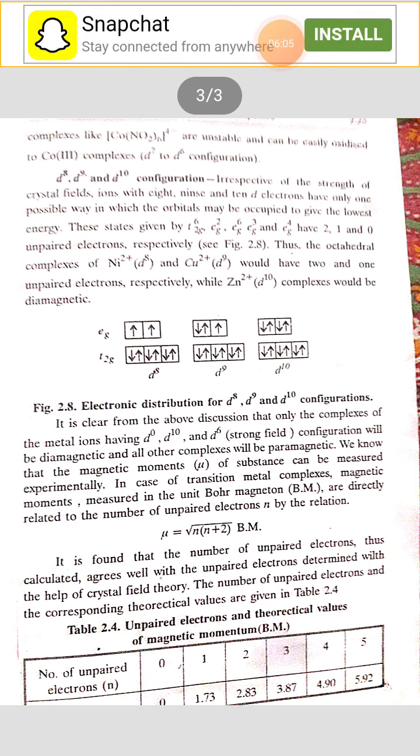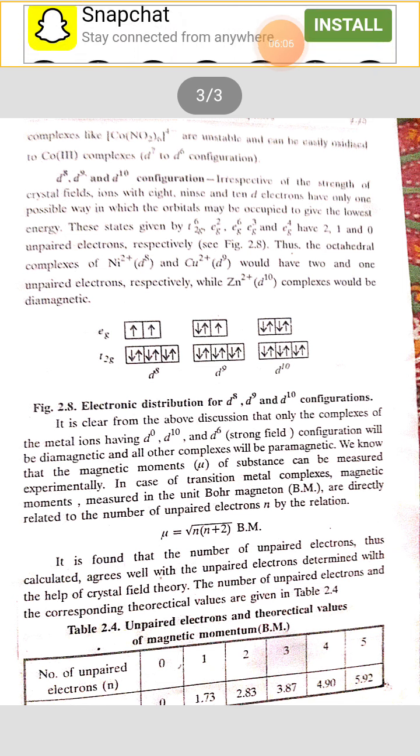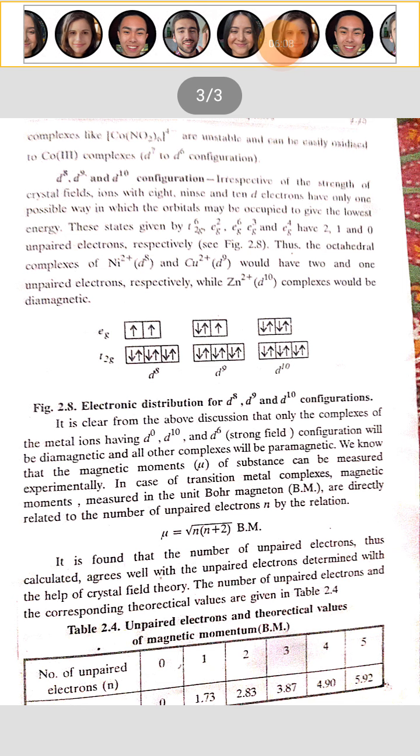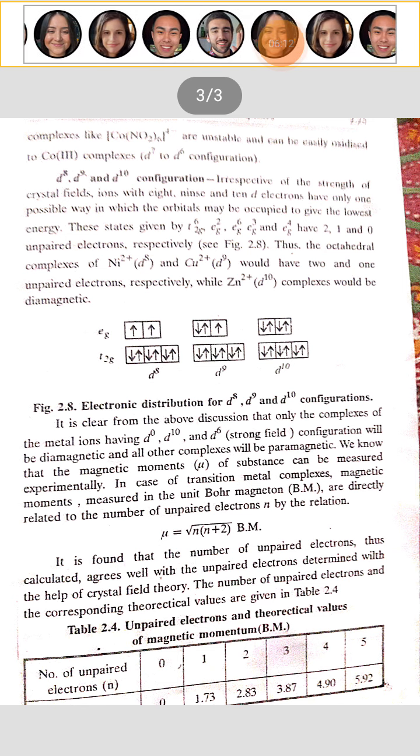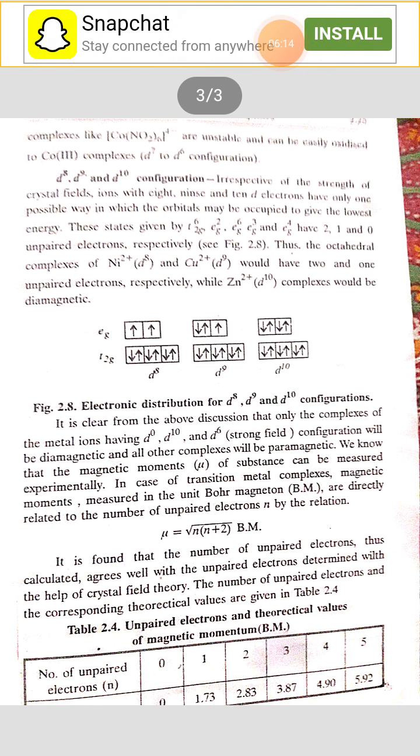Copper has the D9 system and it makes usually square planar complexes in which one electron, no electron is going to shift.